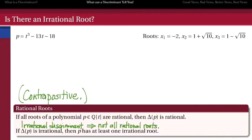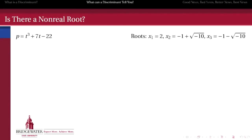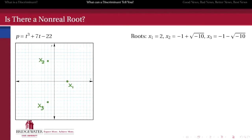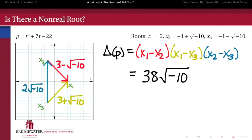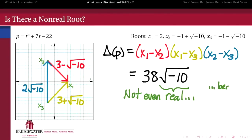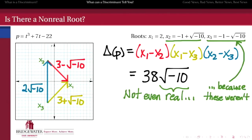What's good for irrational is also good for non-real. Here's an example of a cubic polynomial with two non-real roots, negative 1 plus or minus radical negative 10, arranged in the complex plane as shown. When we compute its discriminant by multiplying the pairwise differences of these roots by one another, we get 38 square root of negative 10, which is not a rational number — it's not even a real number. It's not an accident that that's not real, because we got the discriminant by multiplying the differences of pairwise roots, and two of those roots were not real, so it's reasonable to expect that neither is their product.